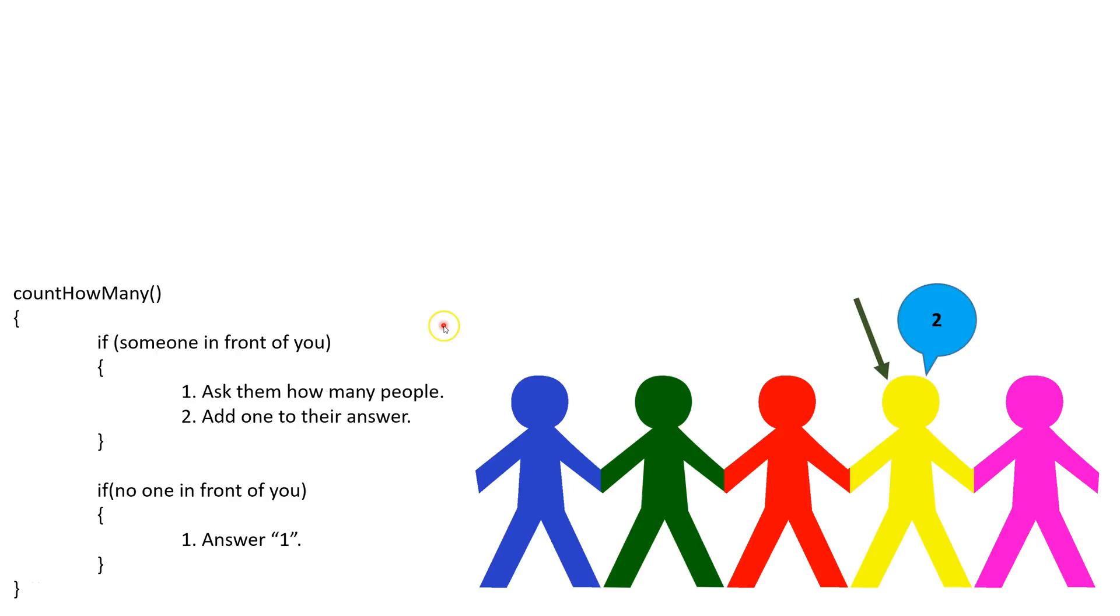Now that yellow has a response from pink, he can do the second part and add one to pink's answer and he responds two.